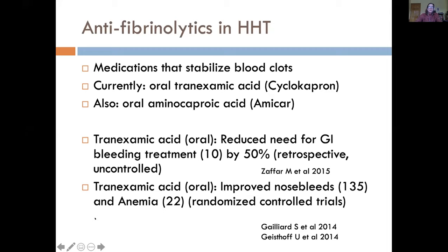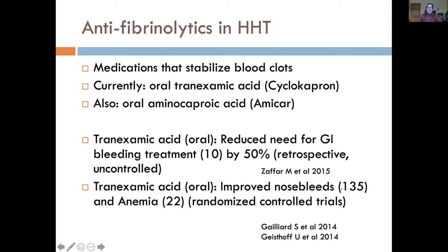We think that if tranexamic acid — a pill or injection that reaches all parts of the body — works well on the telangiectasia bleeding from the nasal mucosa, then it will likely work well on telangiectasia bleeding from the GI mucosa. The evidence comes from two randomized controlled trials measuring nosebleeds in 135 and 22 patients respectively, showing improvement in nosebleeds and anemia, plus a small retrospective series of 10 GI bleeding patients with significant clinical improvement and less need for medical and endoscopic interventions.